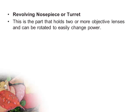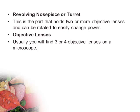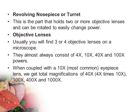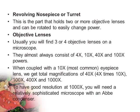Objective lenses: usually you will find three or four objective lenses on a microscope. They almost always consist of 4x, 10x, 40x, and 100x powers. When coupled with a 10x eyepiece lens, we get total magnifications of 40x, 100x, 400x, and 1000x. To have good resolution at 1000x, you will need a relatively sophisticated microscope with an Abbe condenser.